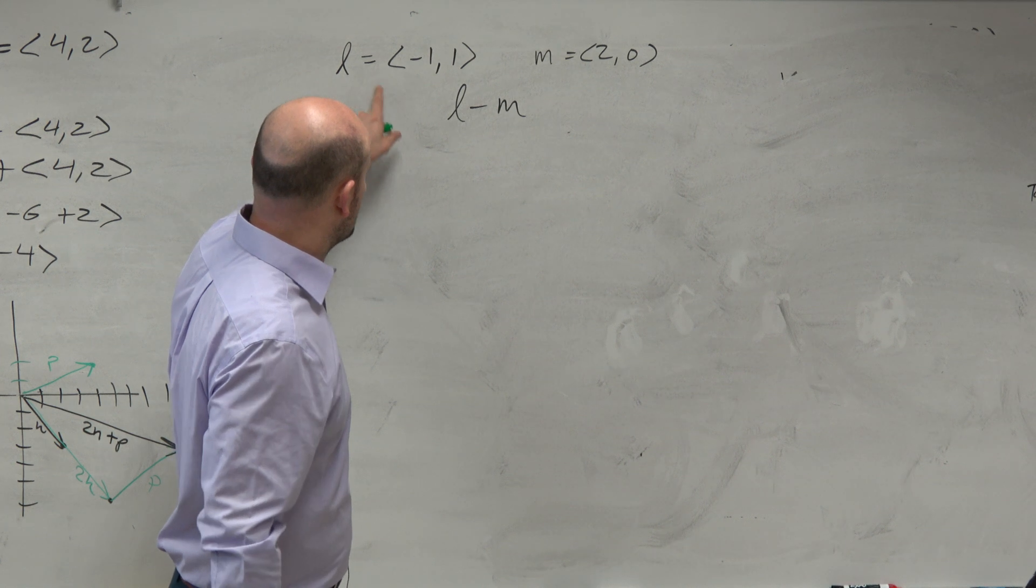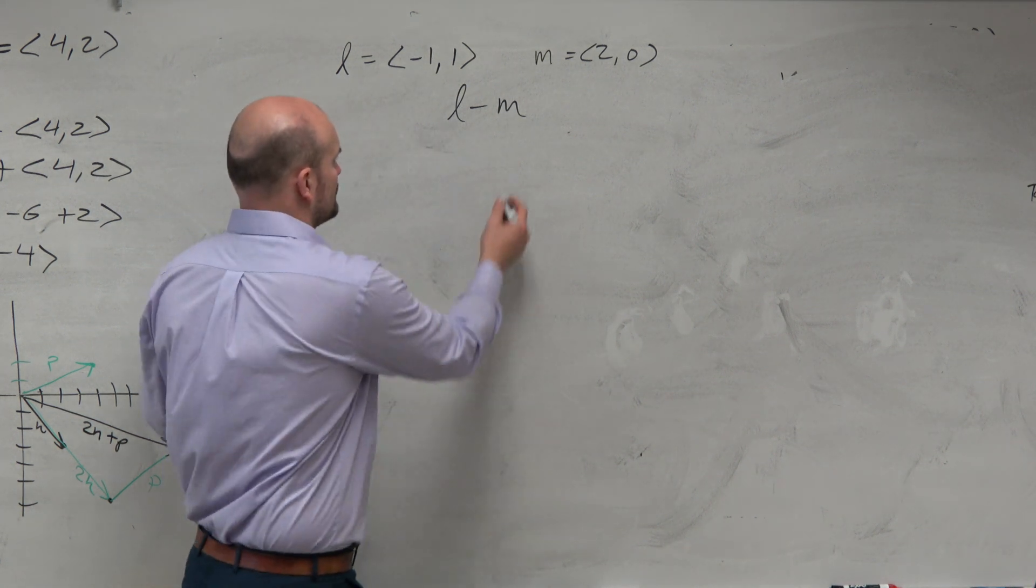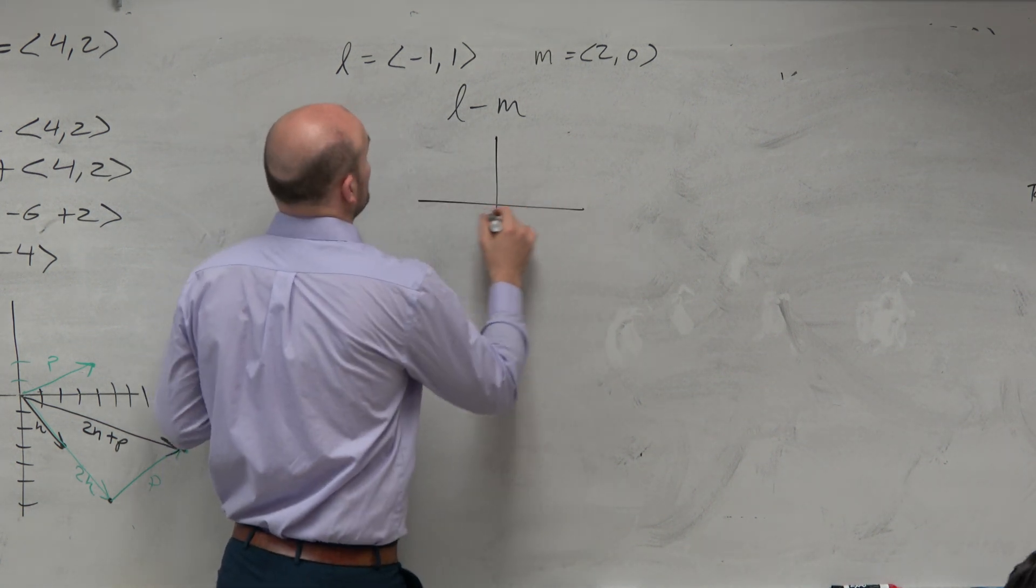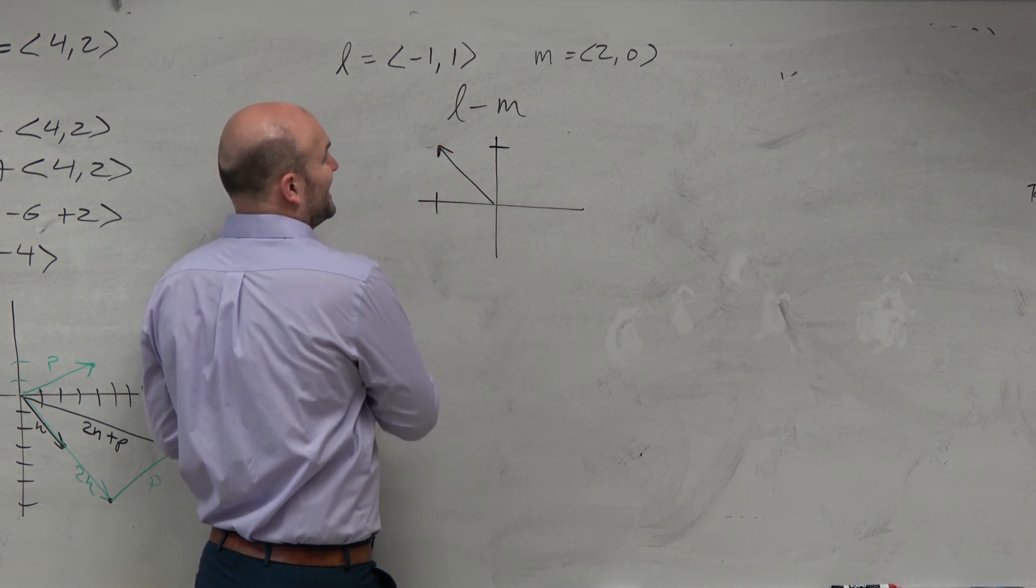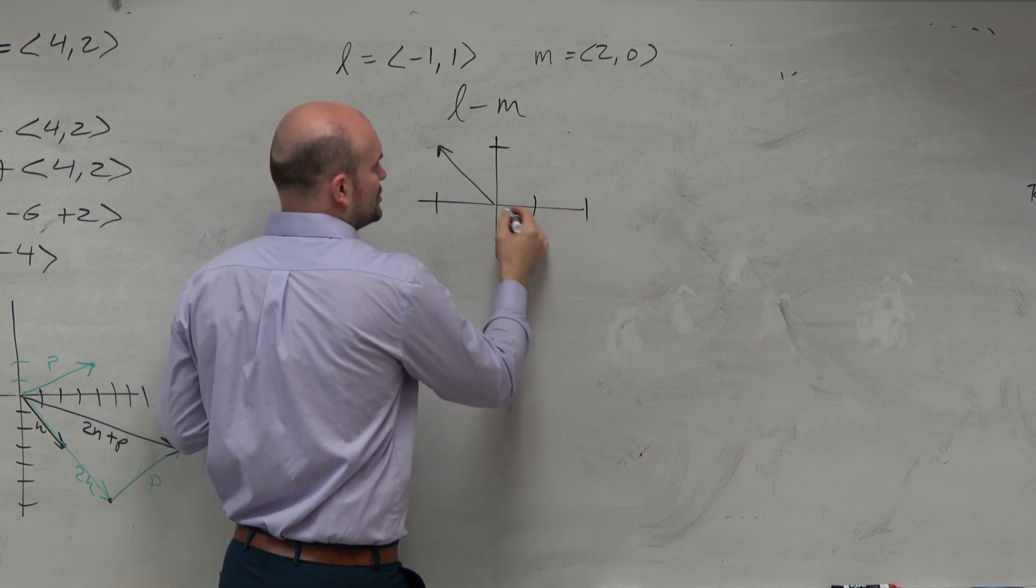So I have L minus M. So I have L, and I have M. So let's graph these together. L is negative 1, 1. M is going to be 2, 0.